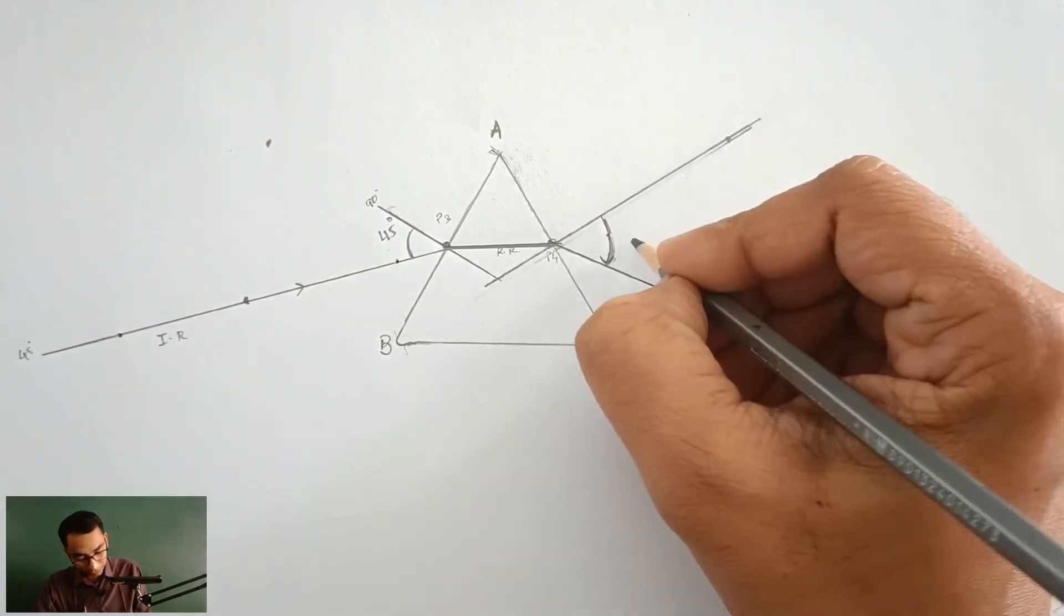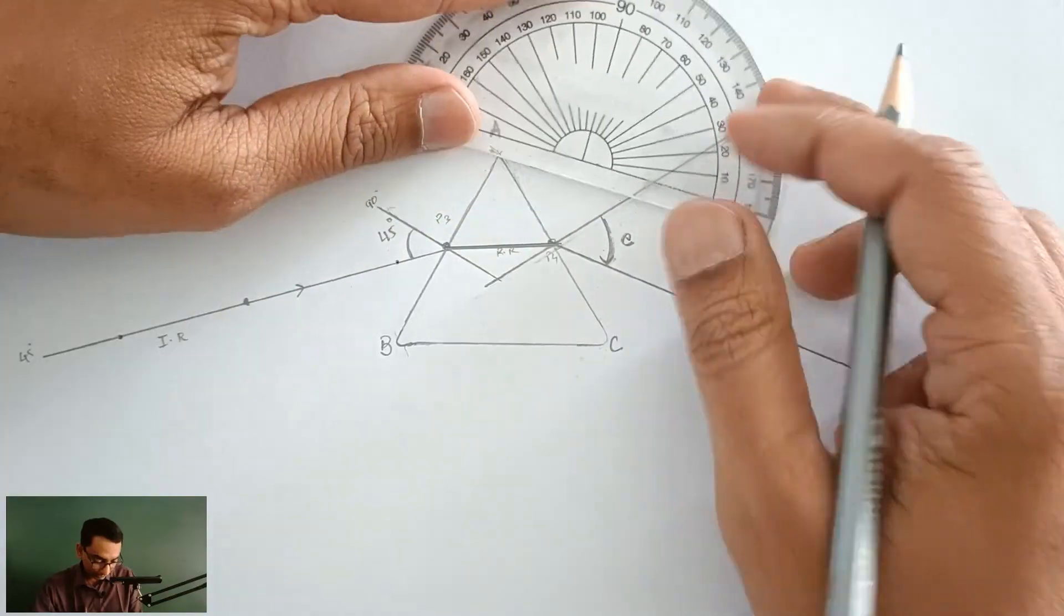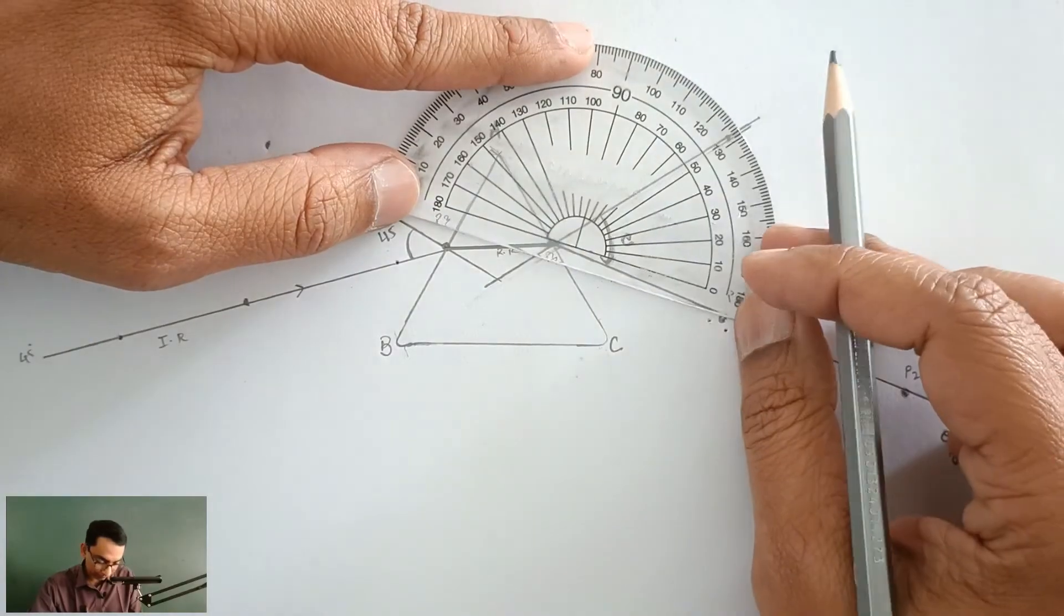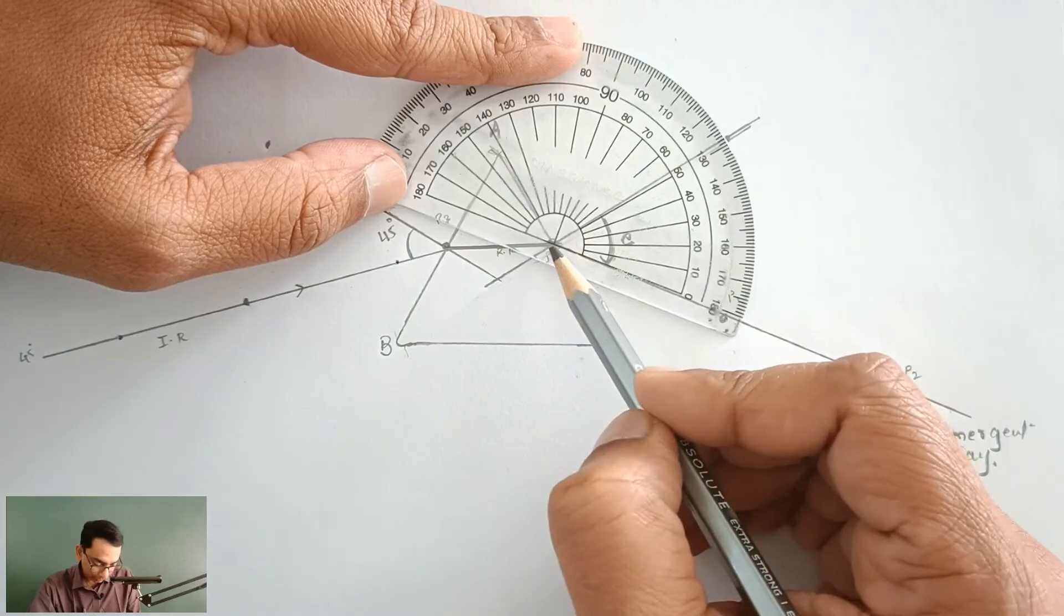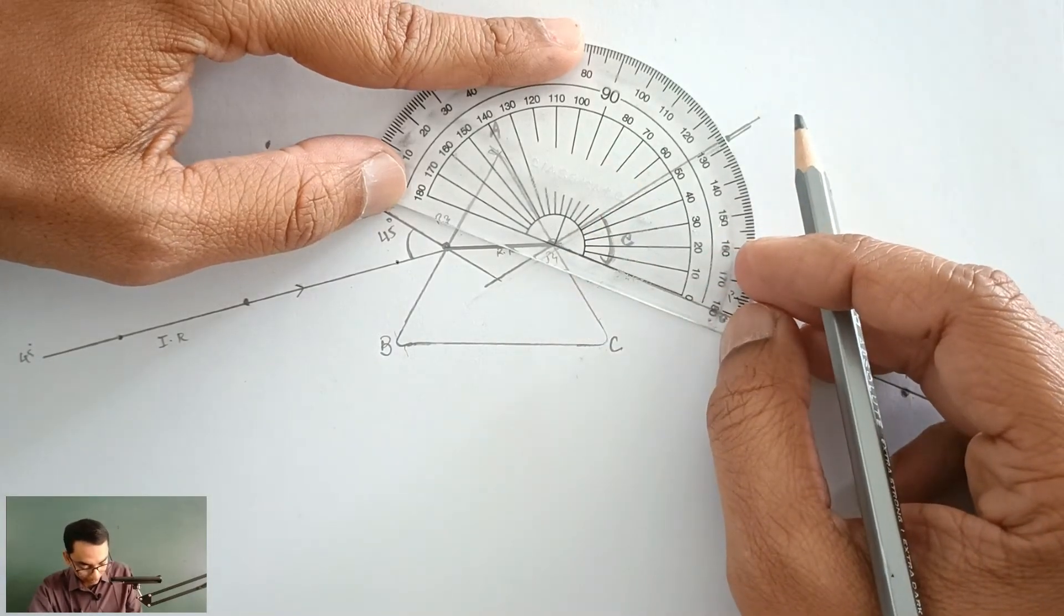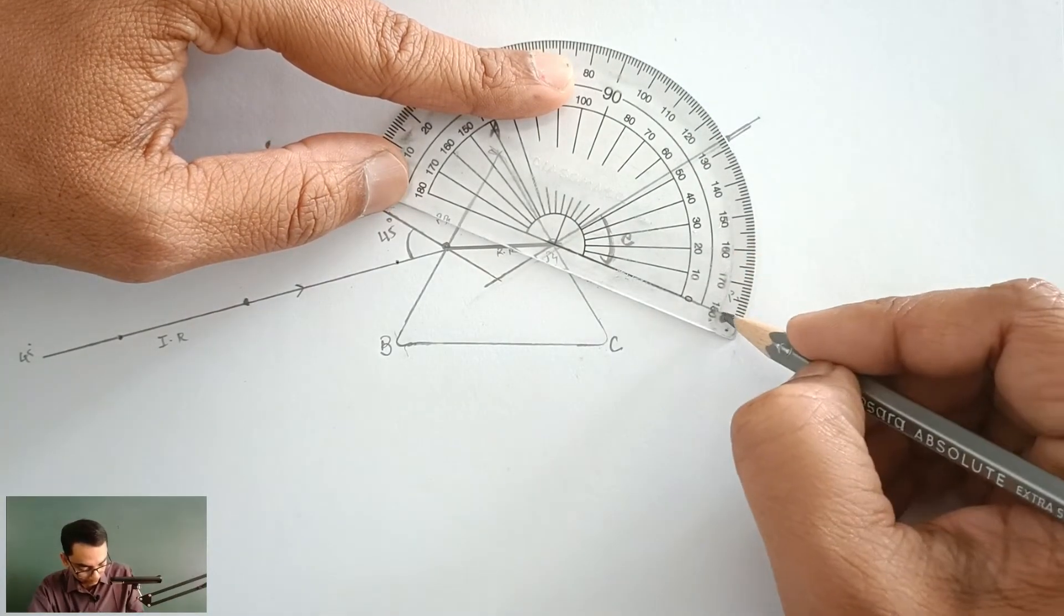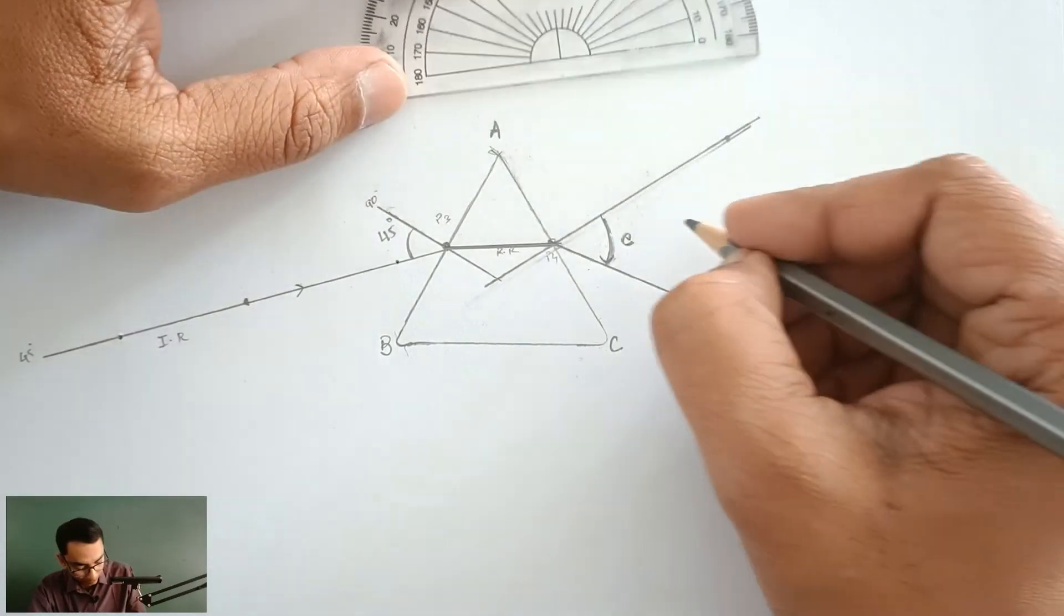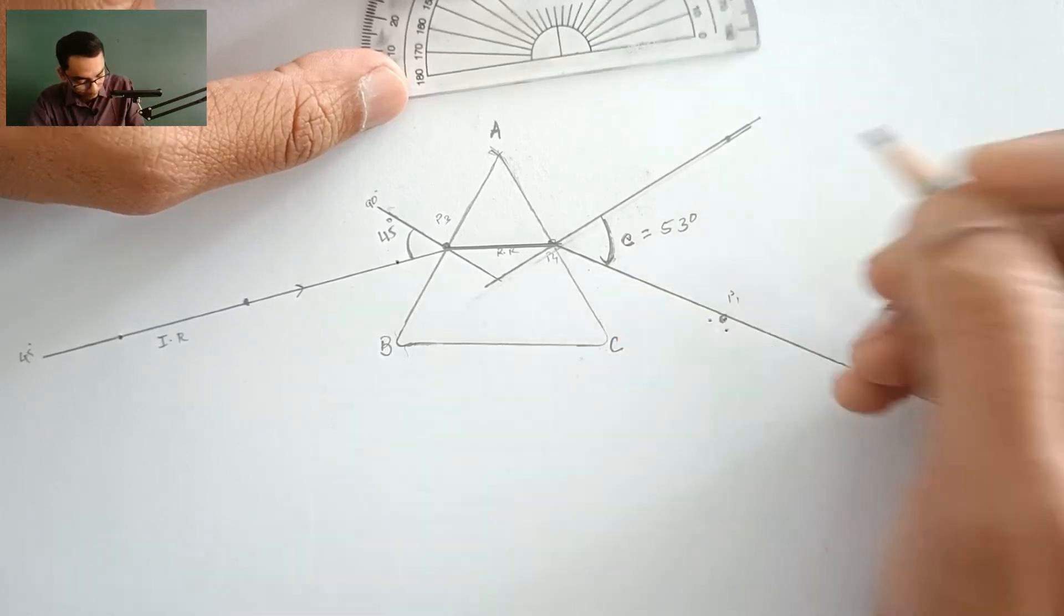So this is my angle of emergence E and I am going to measure the angle of emergence by using the protractor. Please put the protractor like this such that this line should match with our emergent ray and this point of the protractor must match with this particular point. So I am getting the angle of emergence as 10, 20, 30, 40, 50 roughly around 53 degrees.